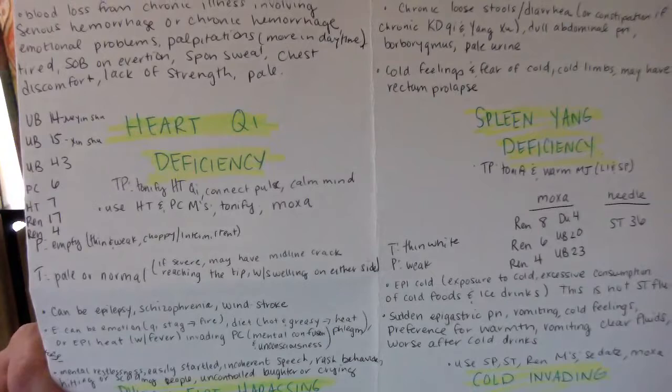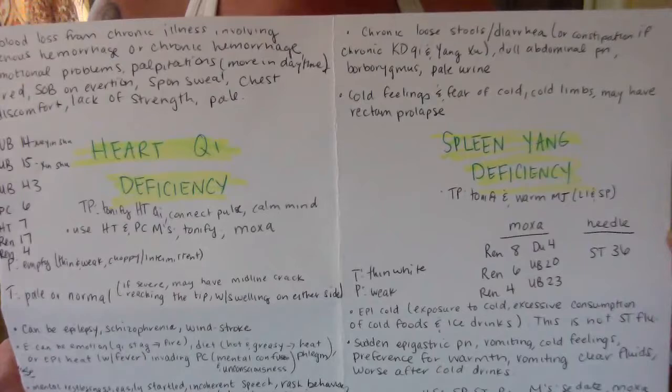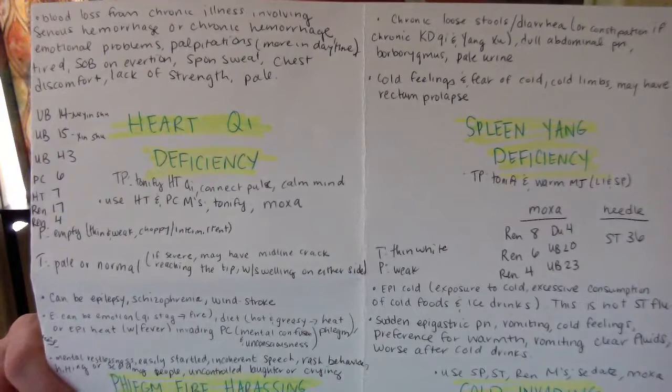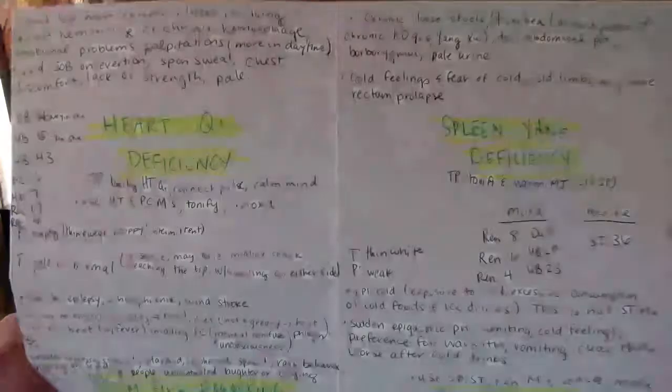Heart chi deficiency treatment principle: tonify heart chi, connect pulse, calm mind. Use heart and pericardium meridians. Tonify and moxa. Points combo: UB14, UB15, UB43, pericardium 6, heart 7, REN17, REN4.